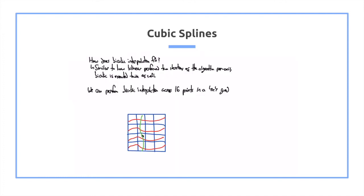How does bicubic interpolation fit in? It's very similar to bilinear interpolation, how to perform two iterations, first on the horizontal and then on the y-axis.